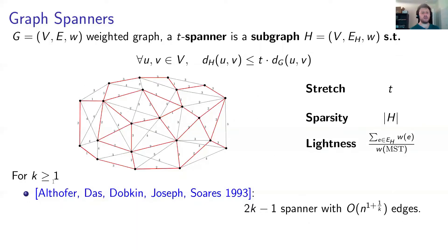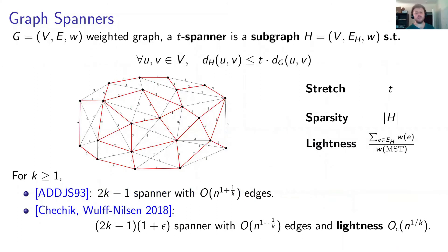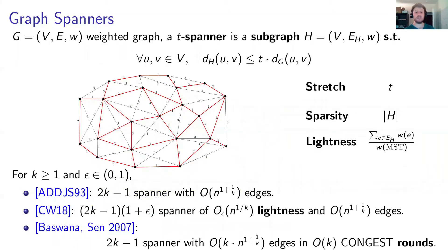Previous results are the following. For every parameter K, Altafer et al. showed that one can construct a (2K minus 1)-spanner with n to the 1 plus 1 over K edges, which is believed to be tight up to Erdős's conjecture. Chesik and Wolfielsen, improving previous results, constructed a (2K minus 1)(1 plus epsilon)-spanner with the same number of edges and lightness n to the 1 over K. The natural question is: what about the congested model? Swannet et al. constructed a (2K minus 1)-spanner with number of edges K times n to the 1 plus 1 over K, which is K times larger than Altafer et al., but constructed in order K congested rounds, which is very fast.